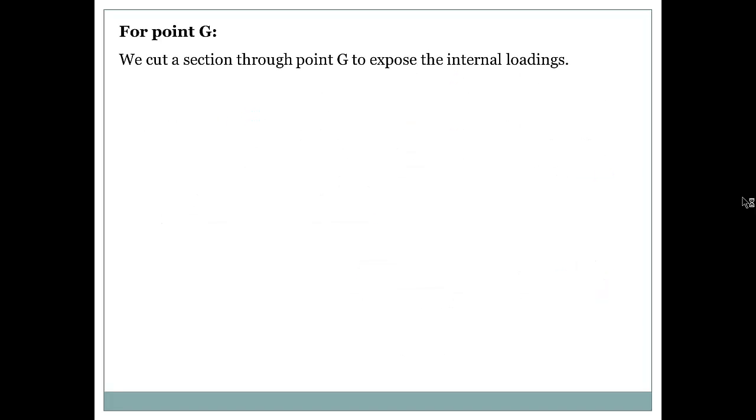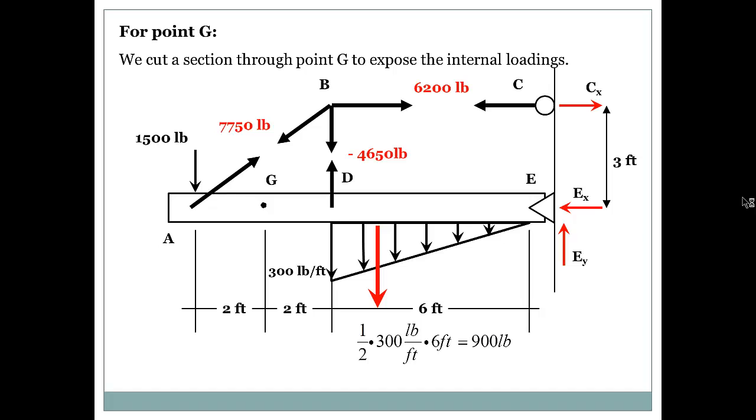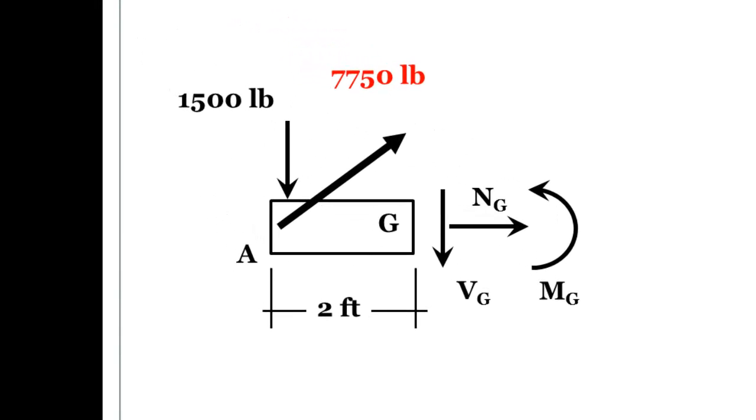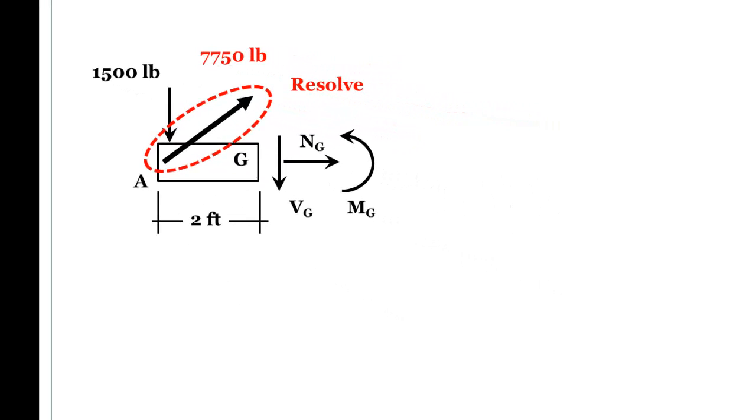For point G, we cut a section through point G to expose the interior loadings. How can we do this? Just take a section through point G. This is the section. Now in this section I have an inclined force again, which is 7,750 pounds. And remember if I'm trying to find the NG which is the normal force, or VG which is the shear force, or even if I'm trying to find the moment MG, all the forces should be lying on either the X axis or the Y axis. So what's my next step? Is to resolve this force into its component, the X component and the Y component. Like this.